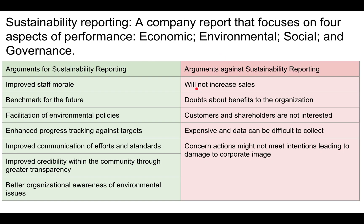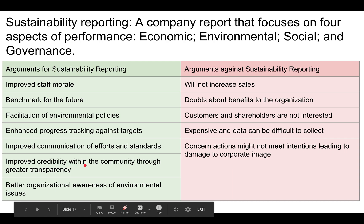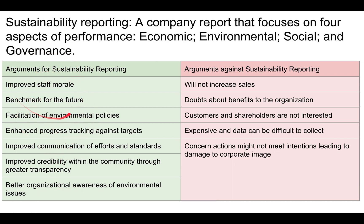Sustainability reporting is a company report that focuses on four aspects of performance: economic, environmental, social, and governance. Arguments for sustainability reporting include: it improves staff morale, serves as a benchmark for the future, facilitates environmental policies, enhances progress tracking against targets, improves communication on sustainability efforts and standards, improves credibility with the community through greater transparency, and builds better organizational awareness of environmental issues.